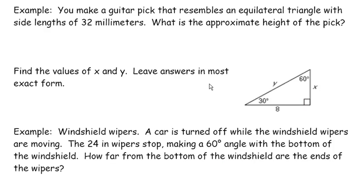Why does it matter? Well, first off, it keeps you from having to do the Pythagorean Theorem. If you recognize that you have either a 30-60-90 right triangle or a 45-45-90 right triangle, and you know the sides, then you don't have to use the Pythagorean Theorem to find the missing side. Also, you only need to know one side length in order to be able to find the other two side lengths, which you can't do when you have just a regular right triangle.